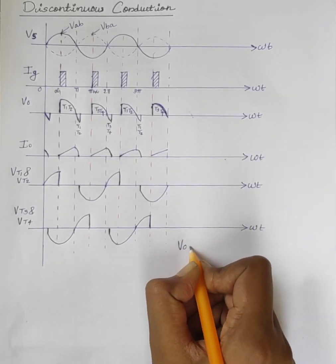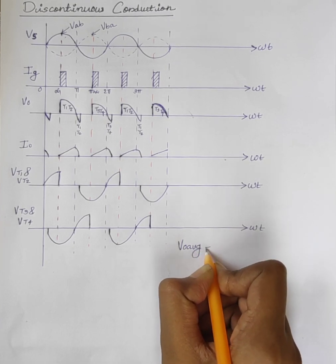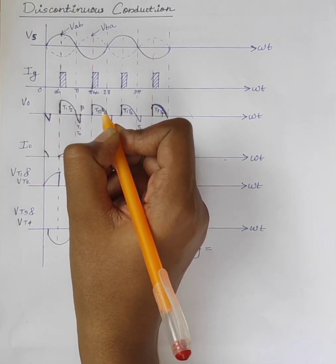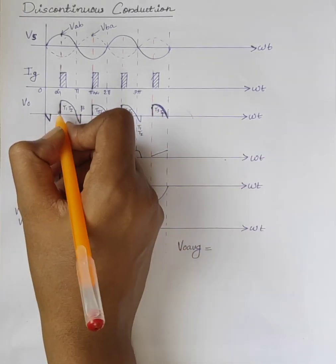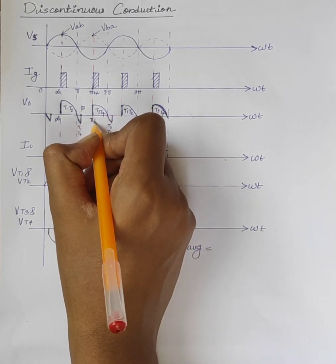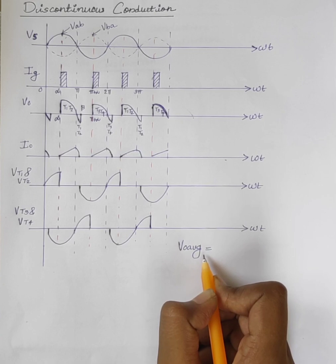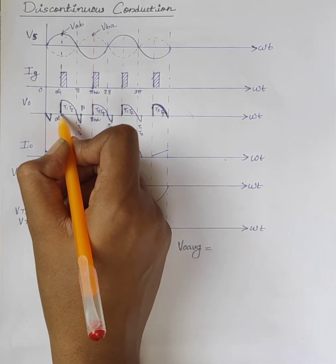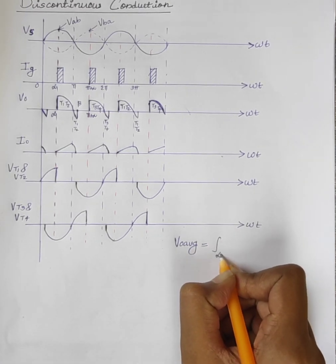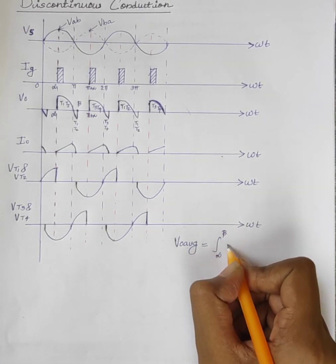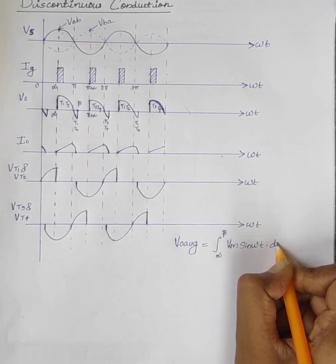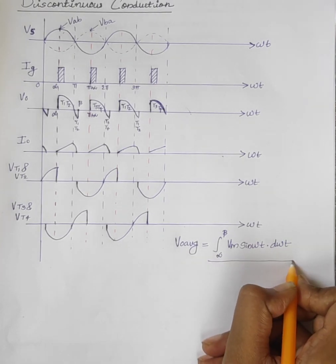V0 average is equal to - we know that this is beta extinction angle beta. V0 average is from this point to this point. That is, integral alpha to beta, Vm sin omega t d omega t divided by base.